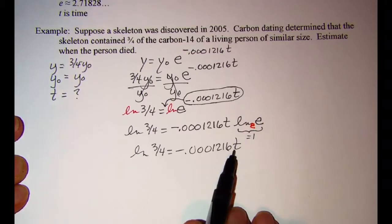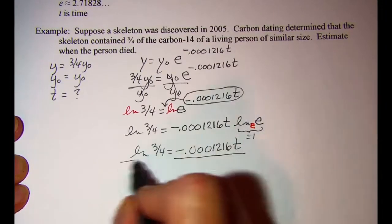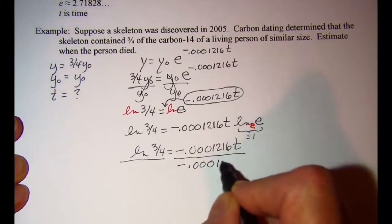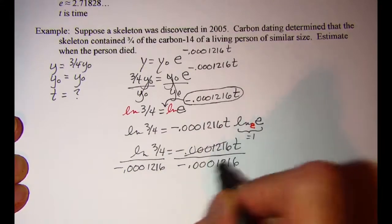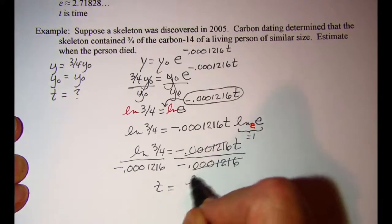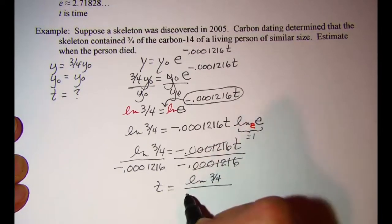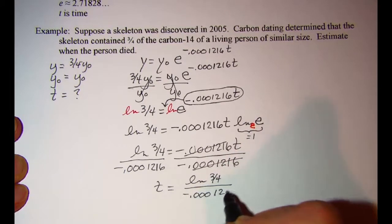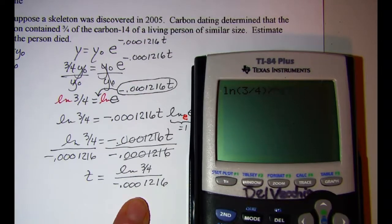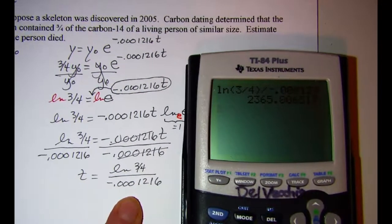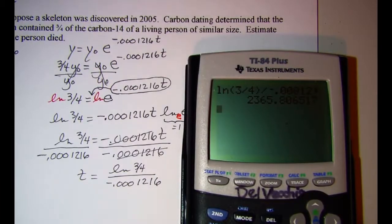To get t by itself, I need to divide both sides by this decimal. And so I have t is equal to the ln of three-fourths divided by that decimal. So ln of three divided by four divided by negative 0.0001216 equals 2365.8, so let's say 2366.